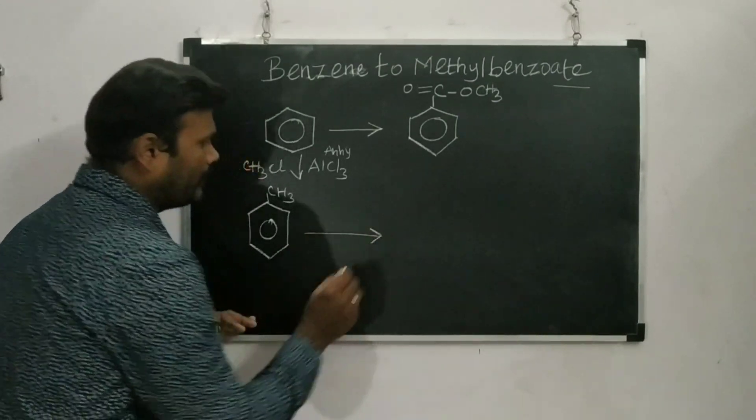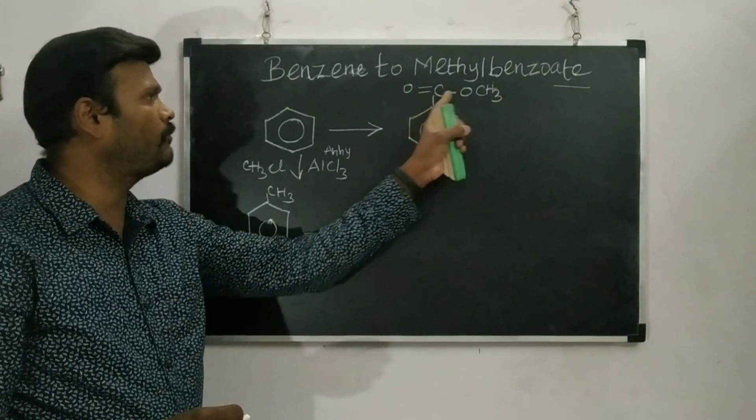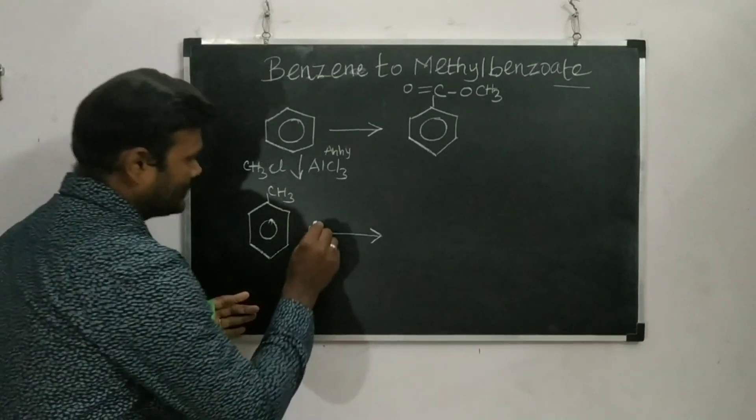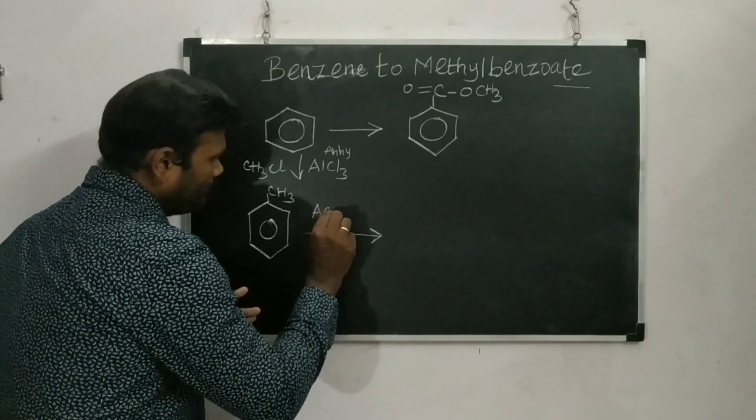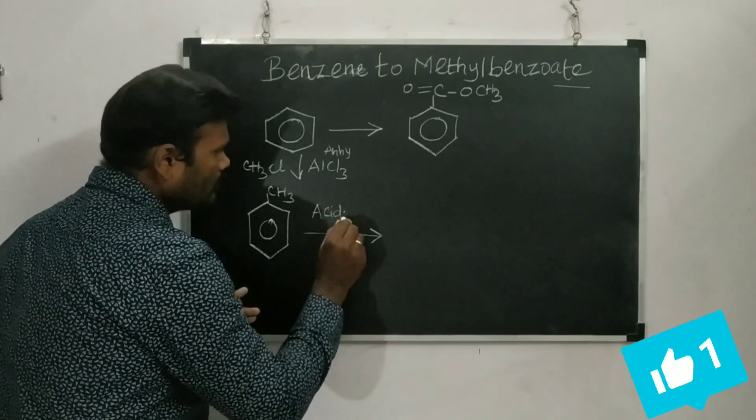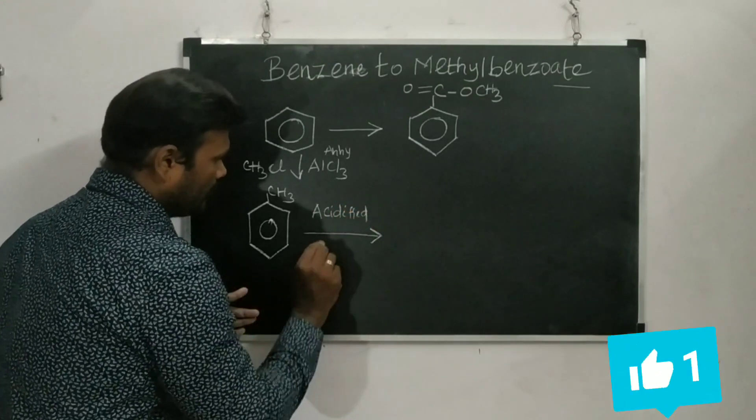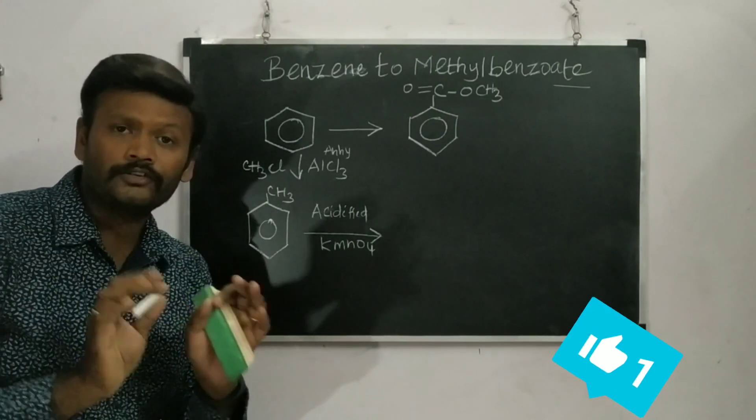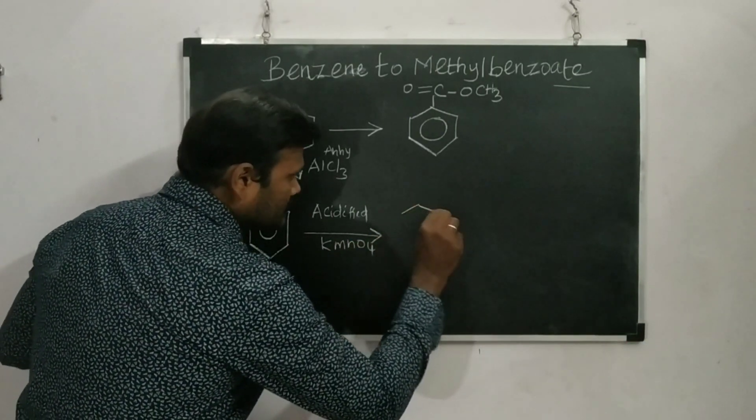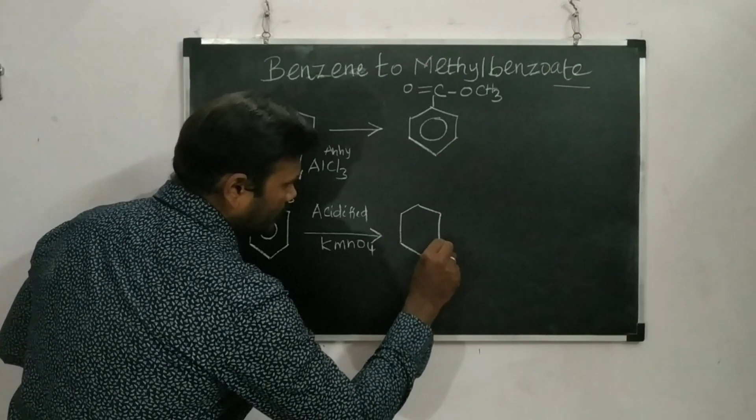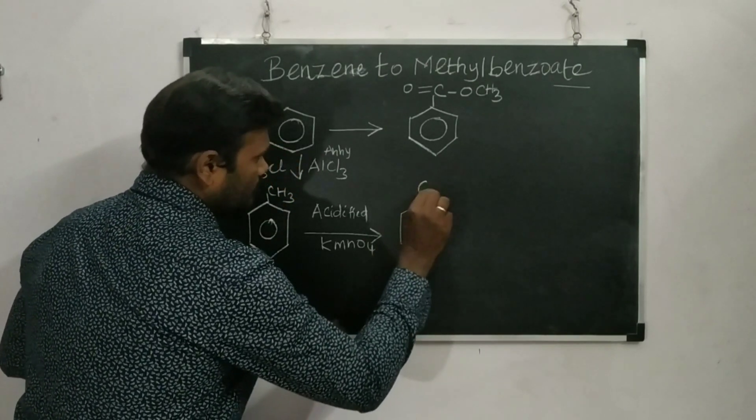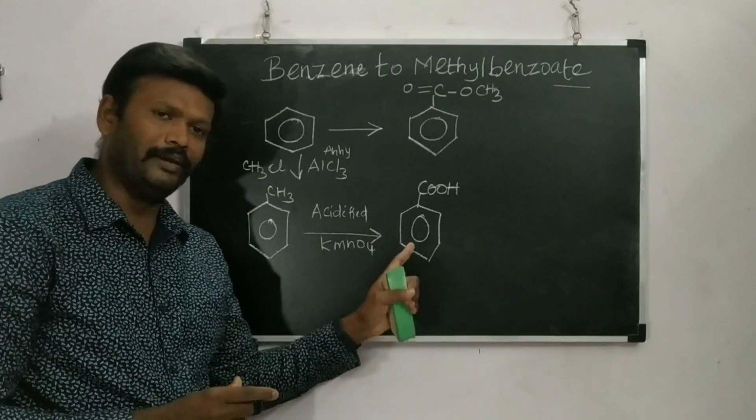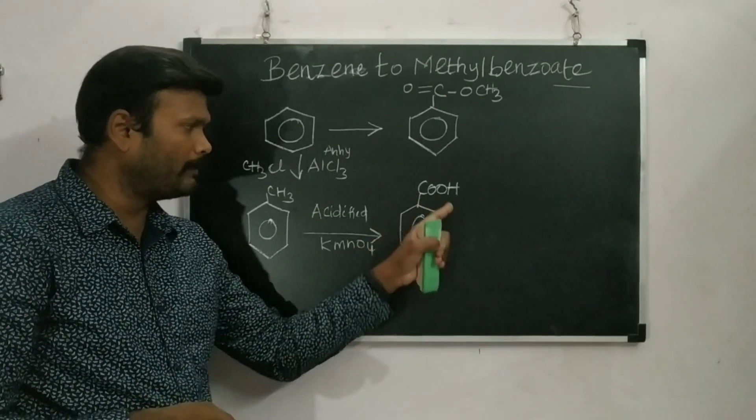Once I got toluene, I need to convert this into COO group. For that I need to do oxidation, using acidified K-permanganate because that will be acting as a strong oxidizing agent. I will be getting converted into benzoic acid with COOH there. So here I got benzoic acid.